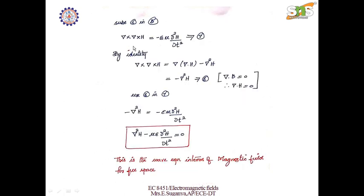Now considering Maxwell's equation from Faraday's law: del cross E is equal to minus dou B by dou t. Differentiating both sides, the equation becomes del cross dou E by dou t is equal to minus mu dou square H by dou t square. Substituting this condition in the equation, del cross del cross H is equal to minus epsilon mu dou square H by dou t square. Using the identity that del dot B is 0, hence del dot H is also 0, the left hand side becomes minus del square H.